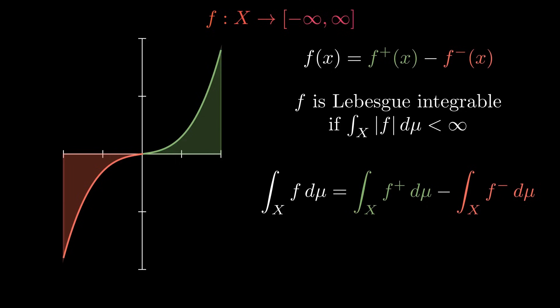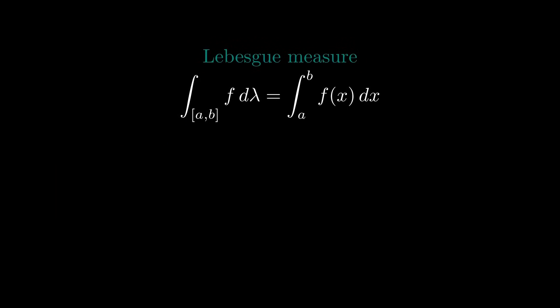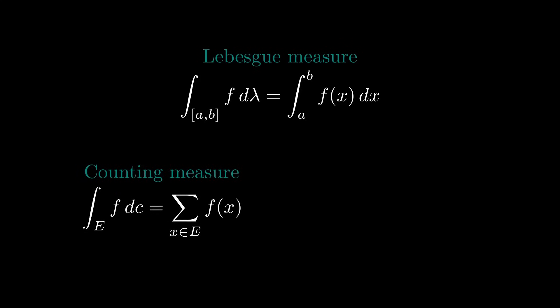Now that we have defined the Lebesgue integral for an arbitrary measure space, we may look at how the integral looks for some specific measure spaces. For the Lebesgue measure, the Lebesgue integral over a bounded interval of a function which is Riemann integrable is just the same as the Riemann integral of that function — and every Riemann integrable function is also Lebesgue integrable. For the counting measure, the Lebesgue integral is the same as summing all of the values of the function. For the Dirac measure, the Lebesgue integral is the function evaluated at the point x which the Dirac measure is centered around.